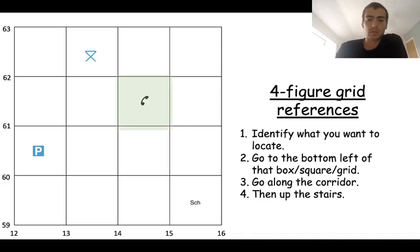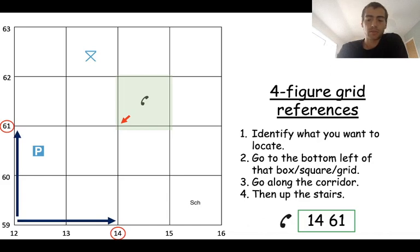So say we use the telephone for the example, so we're going to try and get the coordinates or the reference for that box there. So we go to the bottom left corner, we go along the corridor and get 14, go up the stairs and get 61. And that is our four figure grid reference.